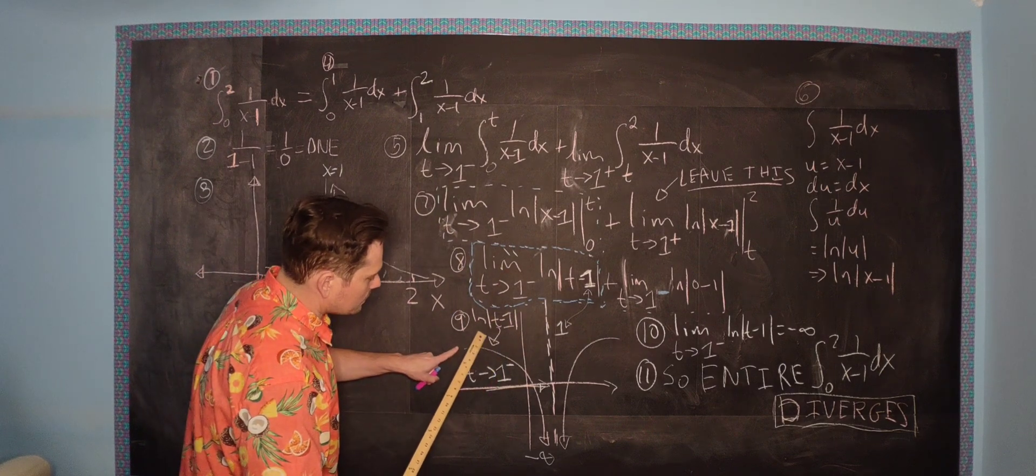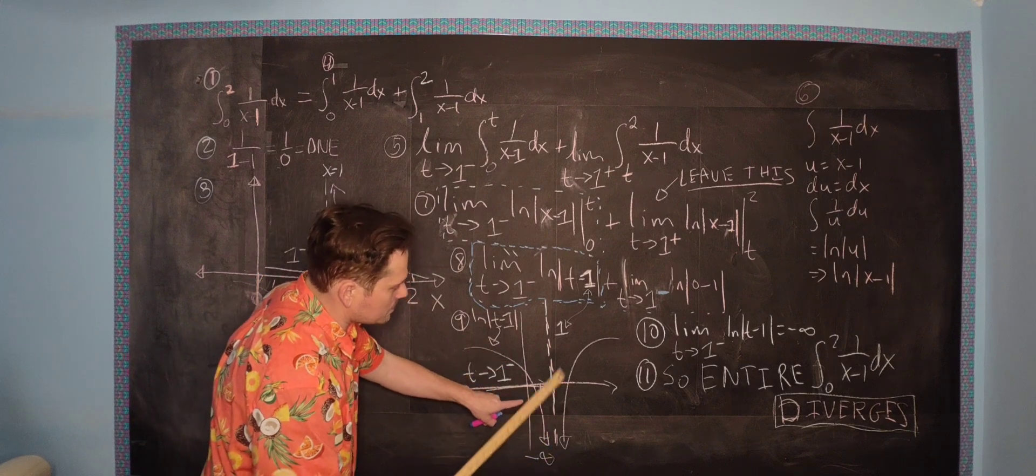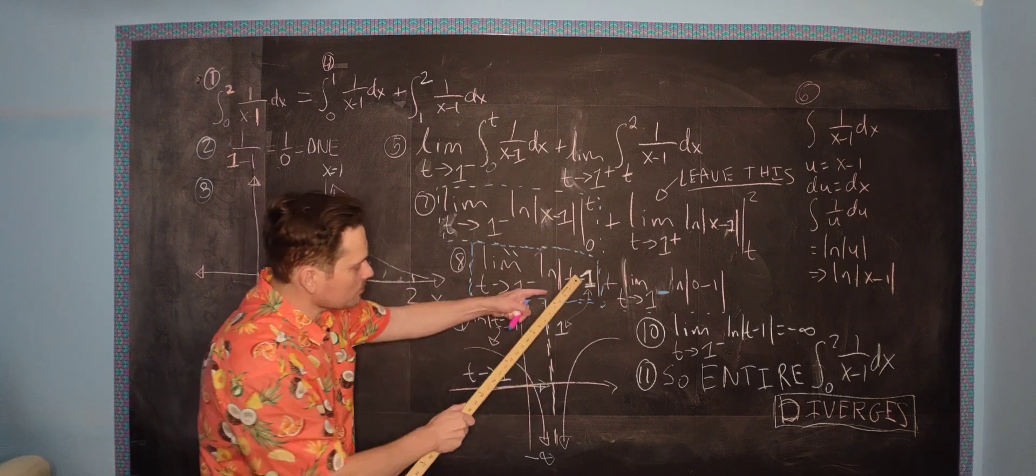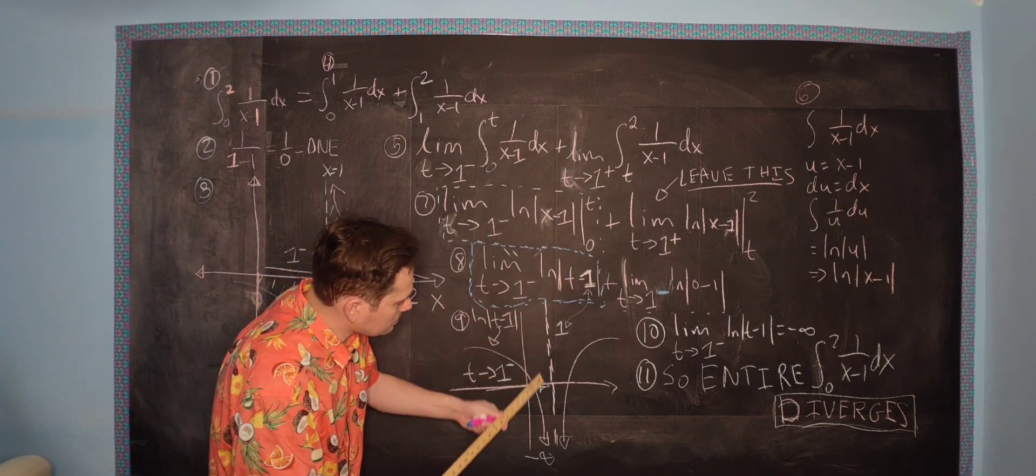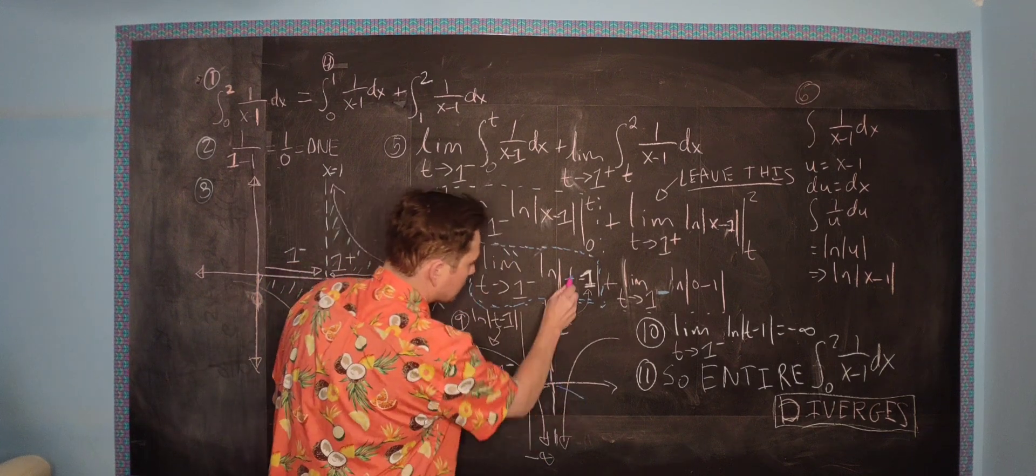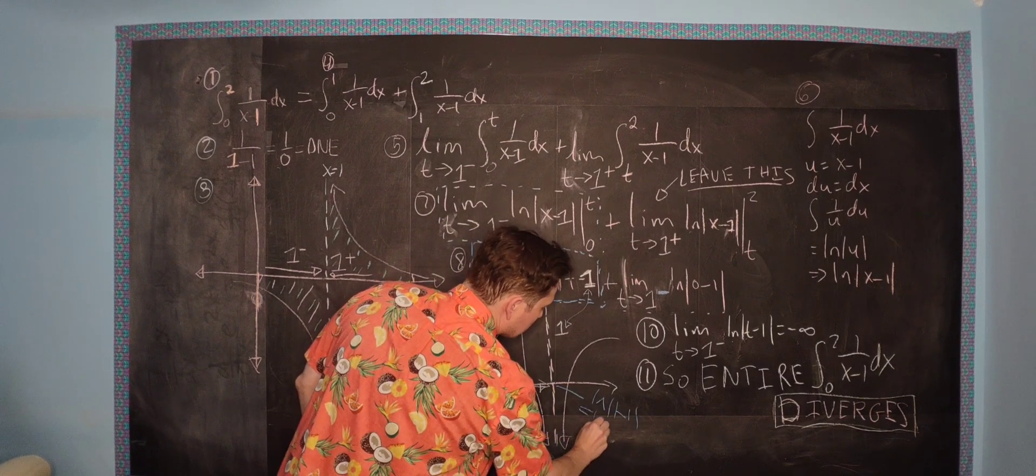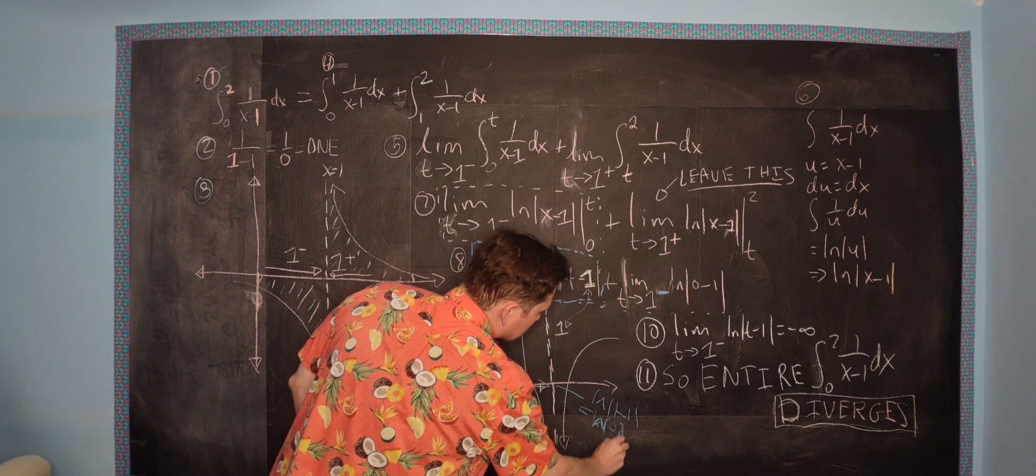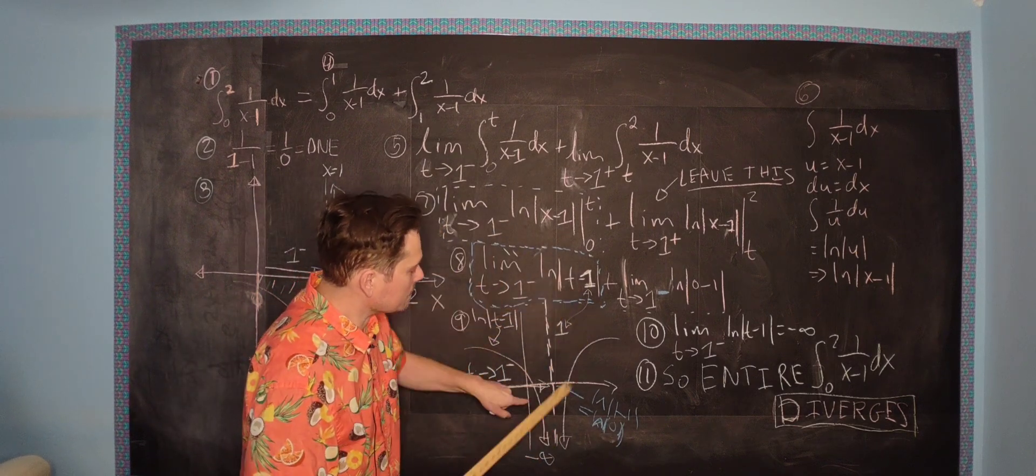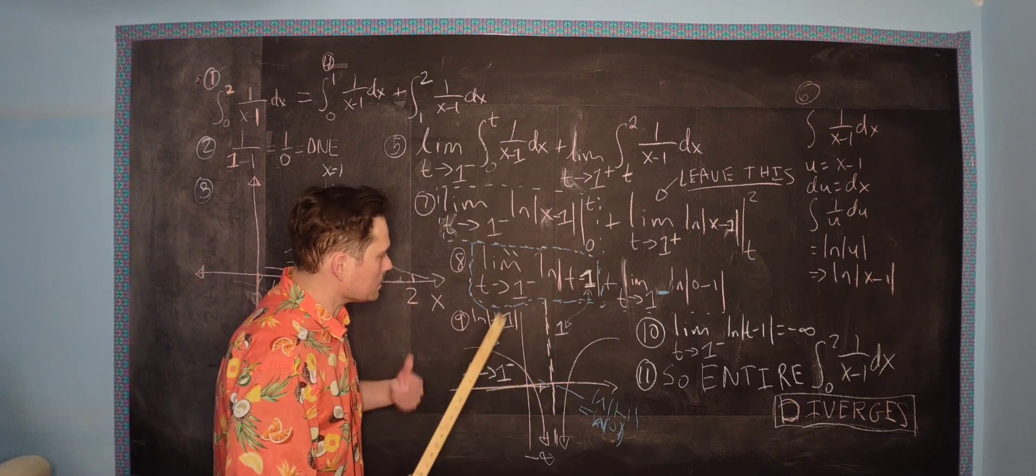Step 9. This is the graph of ln of the absolute value of t minus 1. It's this branch and this branch right here. Positive t equals 1 itself, so if you put a 1 in here, that corresponds to our vertical asymptote. If you put a 1 in here, you would have ln of 1 minus 1, which is ln of 0. That would not be defined. So 1 put in here doesn't work, giving you a vertical asymptote for the function ln of t minus 1.